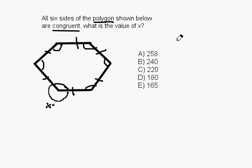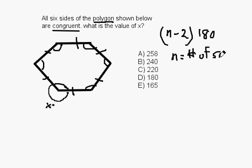And for this, we need a formula. It goes like this: n minus 2 times 180 will give you the total number of degrees inside of the polygon, where n equals the number of sides.